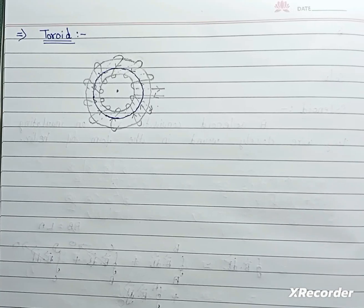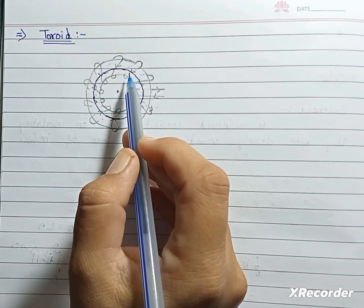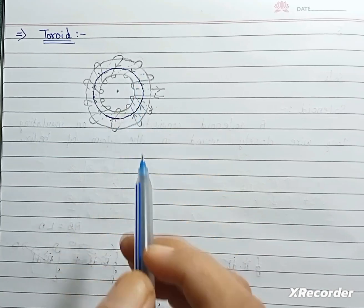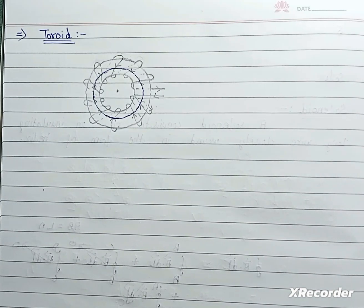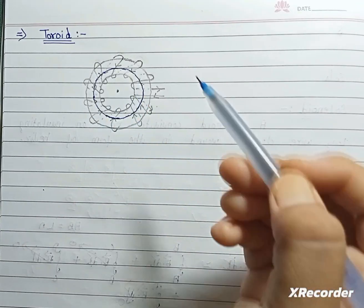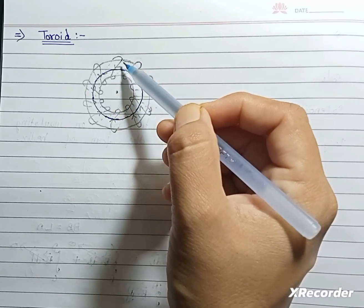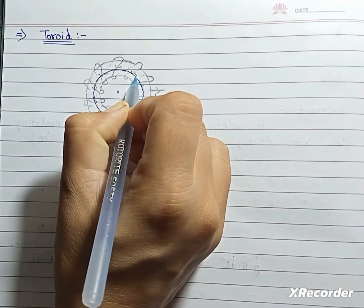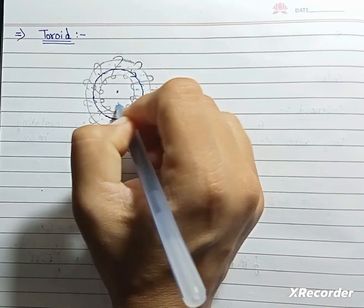Hello students, in this class we will discuss toroid. A toroid is a hollow circular ring on which a large number of insulated turns of metallic wire are closely wound. Here observe this turn - current is flowing in this turn. So the magnetic field forms in this way for the toroid. Now we will calculate the magnetic field for this toroid.